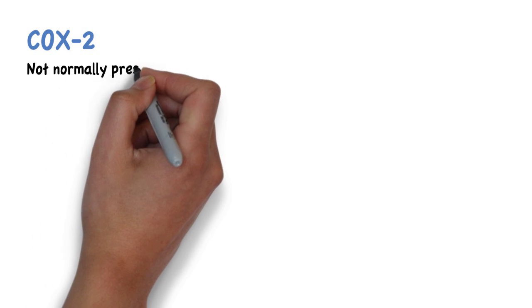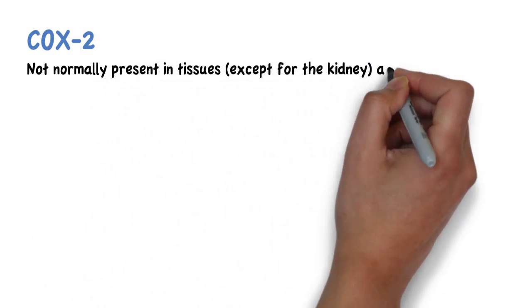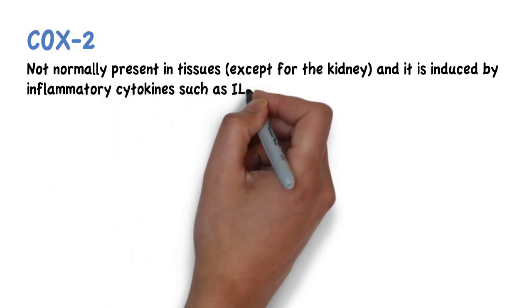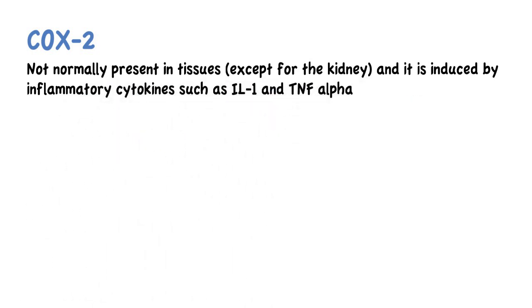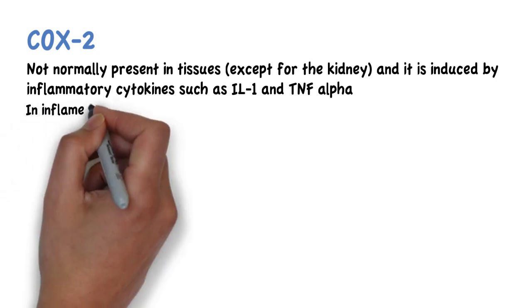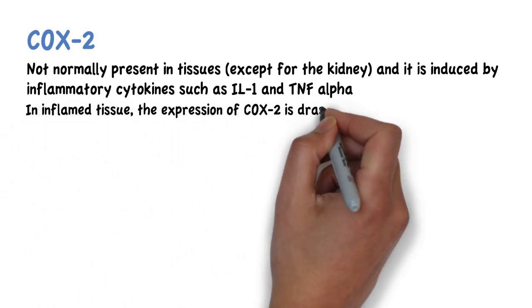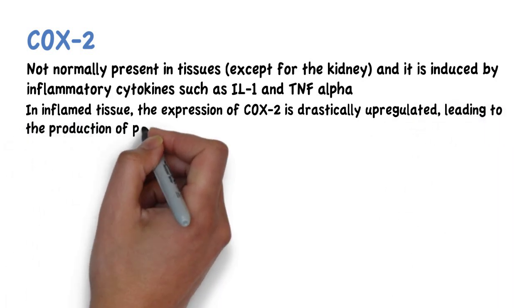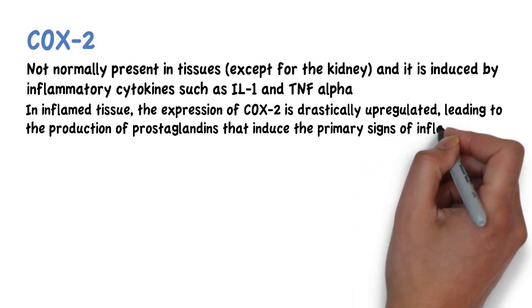COX-2, on the other hand, is not normally present in tissues, except for the kidney, and it is induced by inflammatory cytokines such as interleukin-1 and tumor necrosis factor alpha. In inflamed tissue, the expression of COX-2 is drastically upregulated, leading to the production of prostaglandins that induce the primary signs of inflammation.